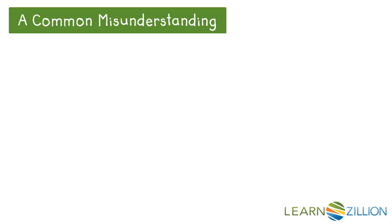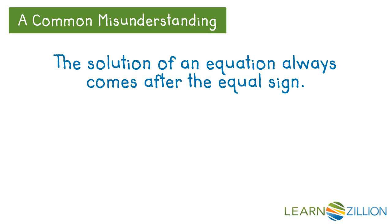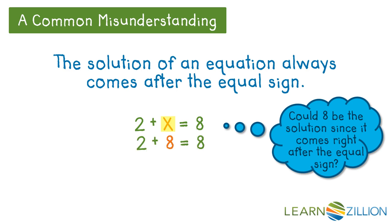Because we often think about moving from left to right and placing our answer at the end, a common misunderstanding that students have is that the solution of an equation always comes after the equal sign. So they might look at this equation and think, could 8 be the solution since it comes right after the equal sign? Well, we could test this theory by substituting 8 in for the variable x and see if it works. When we do this and simplify the left side of the equation, we see that 10 does not equal 8. The two sides do not have the same value, so 8 is not the solution.